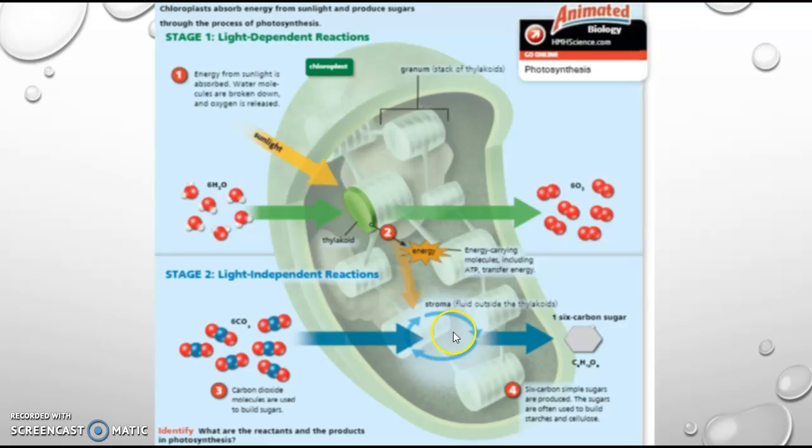ATP will enter the Calvin cycle and break apart carbon dioxide. Carbon dioxide is used to build this molecule over here, C6H12O6, which we call glucose. This would be food for the plant. Also recall that as ATP releases energy, ADP is formed. ADP would go back up here to the light-dependent reactions to be turned into more ATP so the process can continue.